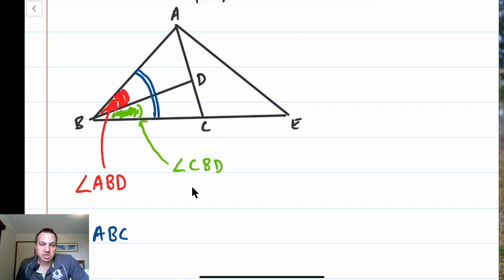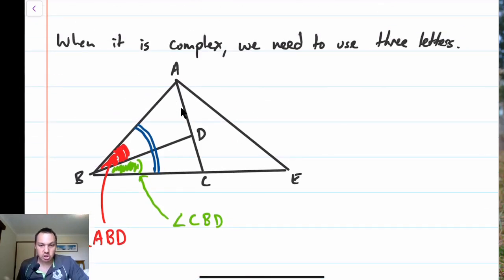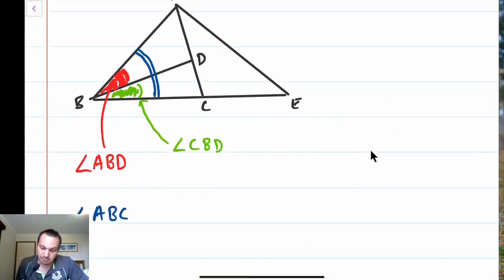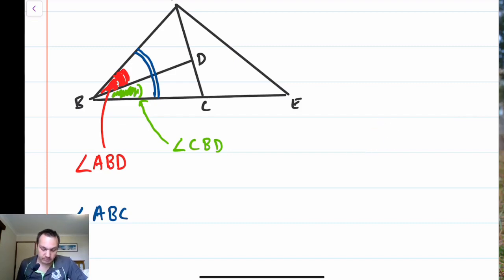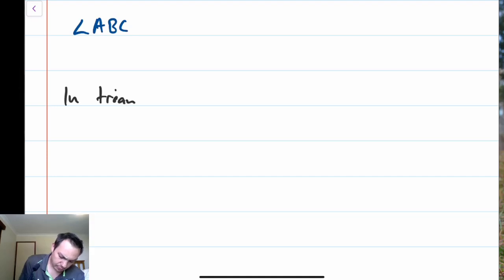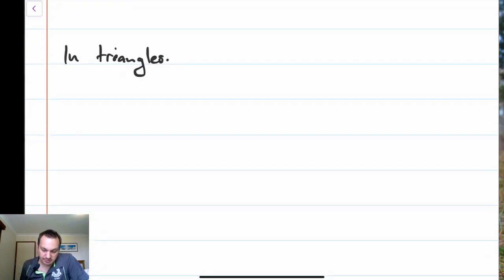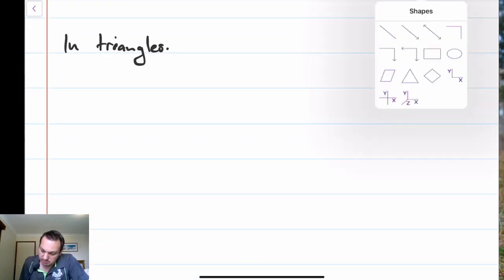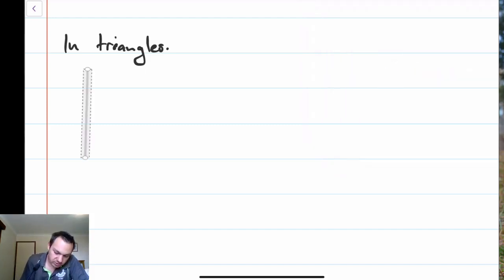We can describe angle ACE — going from A to C to E — and so forth. That's how we describe angles in high school maths using that hat symbol. In some places they still write ABC with an angle symbol above the B. I wanted to bring this up in the context of Pythagoras's theorem and triangles.